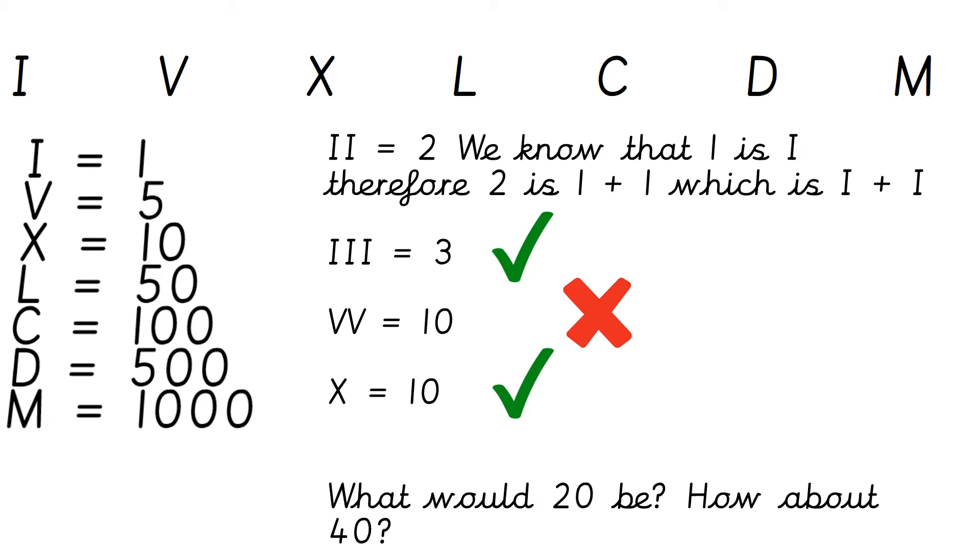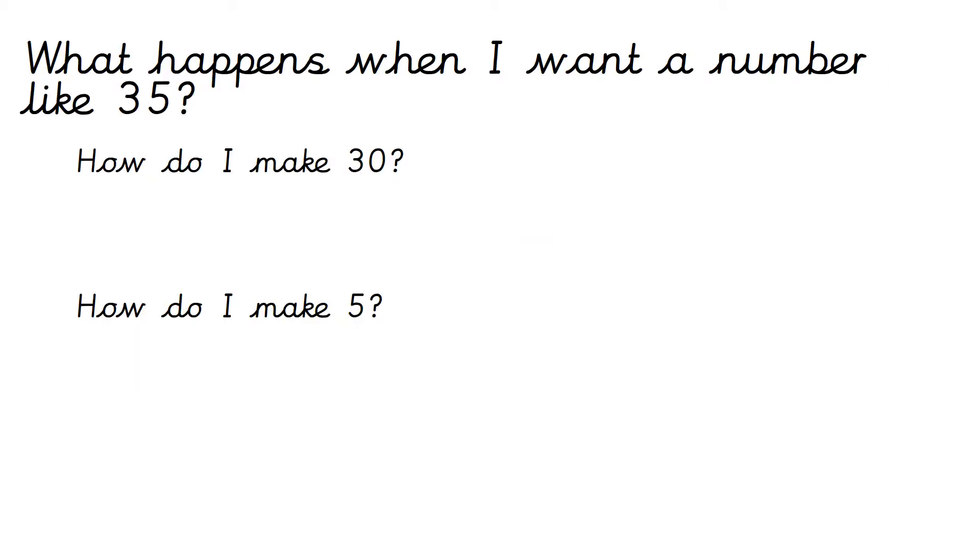So 20 would be XX and 40 would be XL. So what happens then when I want a number like 35? So first of all, I need to think about how I make the number. So how would I make the number 30 in Roman numerals? Well I know that X is 10 so I would want 3 X's. So you've got 10 add 10 add 10 which is 30. XXX.